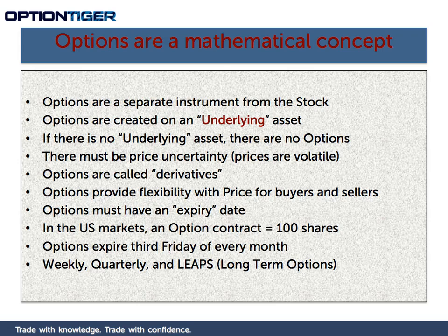With stocks or shares, you own a percentage of a company and are eligible for its profits. With options, there's nothing like that. The second important point is that the underlying asset must have some kind of price uncertainty associated with it — that is, the prices must be volatile to some extent. Whether it's the price of corn, soybean, the US dollar, or a stock, as long as the prices of the underlying asset are moving, you can create an option on that asset.